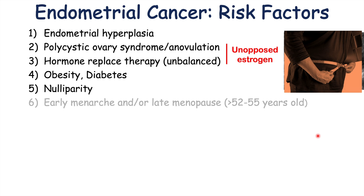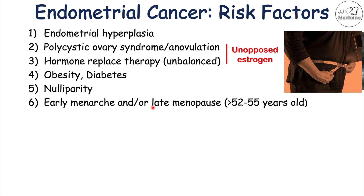Another risk factor for endometrial cancer is early menarche and/or late menopause. Menarche means the first onset of a period in a young female patient's life. If it's early, that means they're going to have multiple menstrual cycles throughout their life and be exposed to estrogen longer. Related to this is late menopause — defined as greater than 52 to 55 years of age — which also prolongs estrogen exposure. Both early menarche and late menopause increase the span of time whereby a patient is exposed to estrogen, leading to thickening of the endometrial lining and increased risk of endometrial cancer.